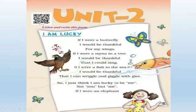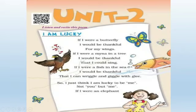Then the girl thinks: if I were a manna — you can see here, which bird is this? This is a manna. Yeh girl think karti hai ki agar main manna hoti toh mere paas beautiful voice hota aur I can sing on a tree, manna jaisi beautiful voice mein. Then this girl thinks: if I were a fish in the sea.